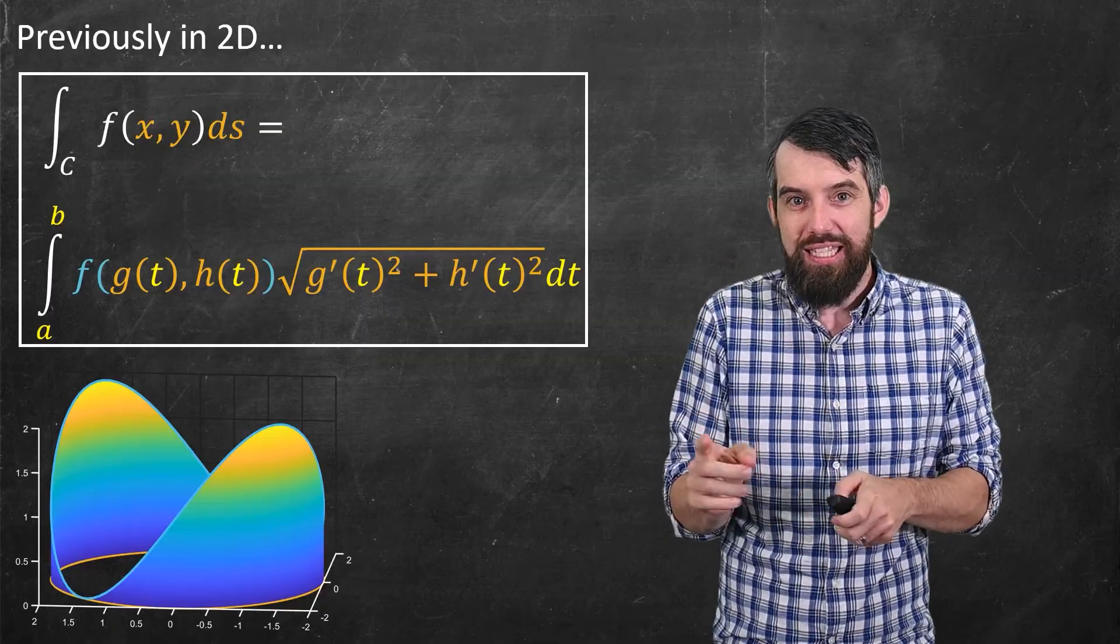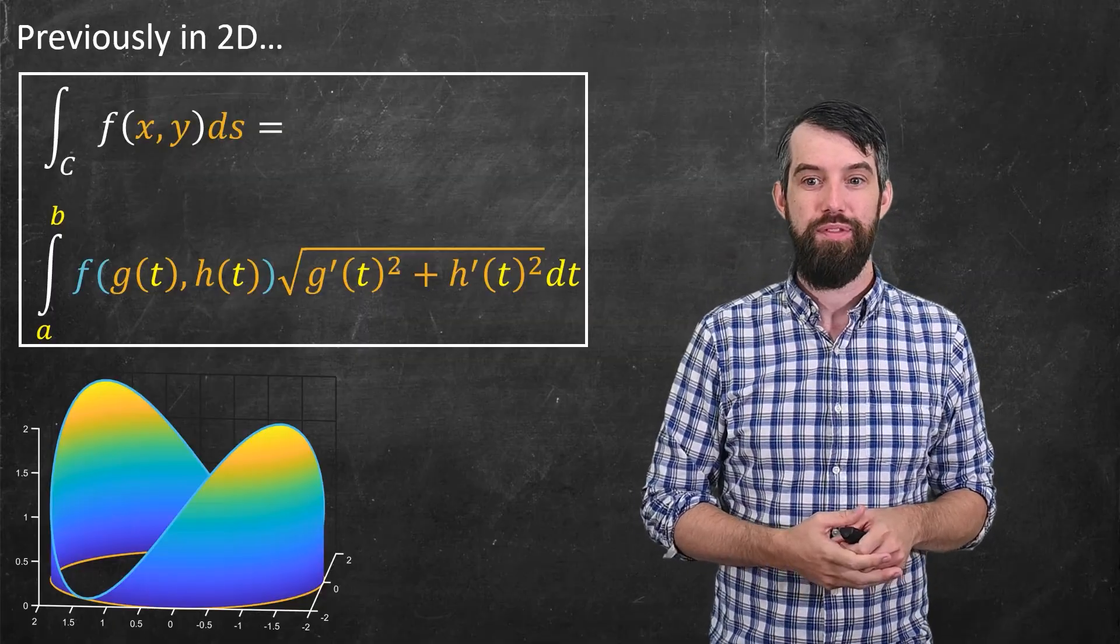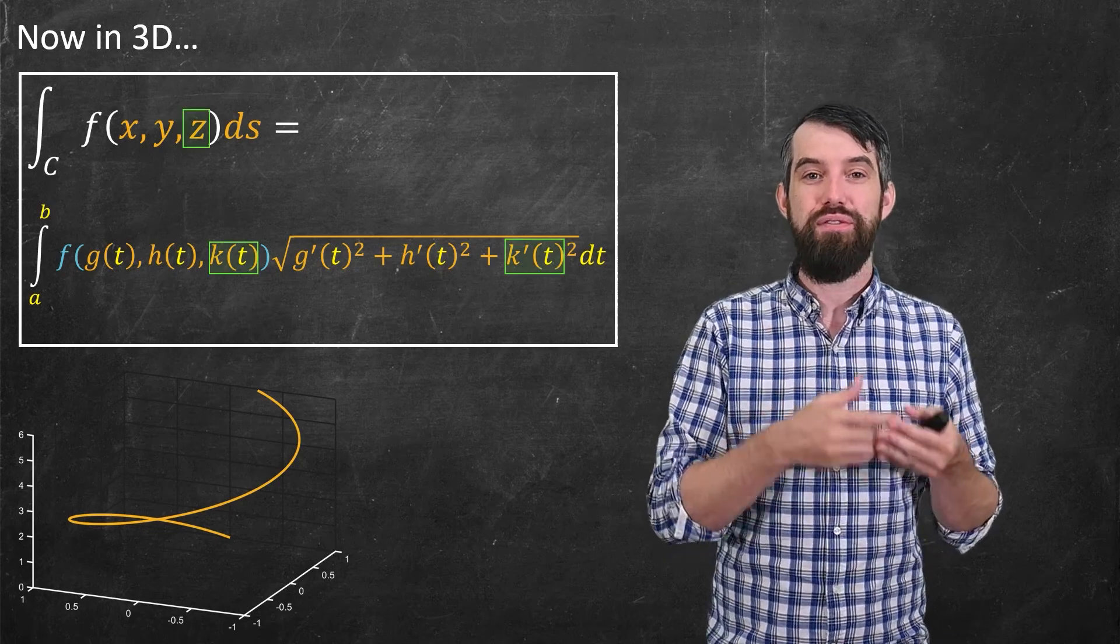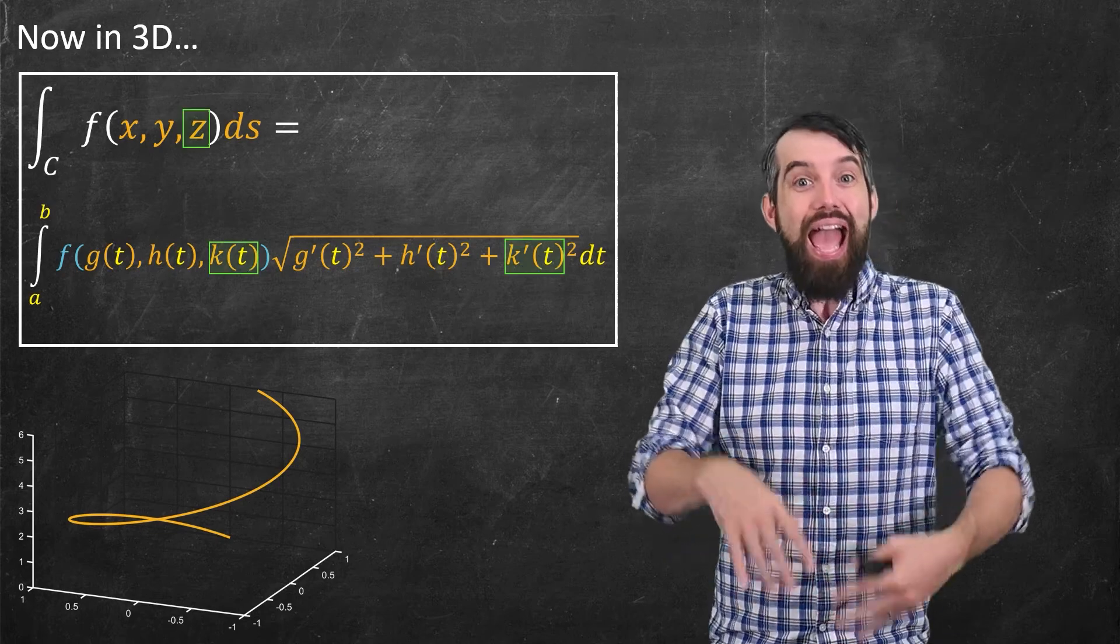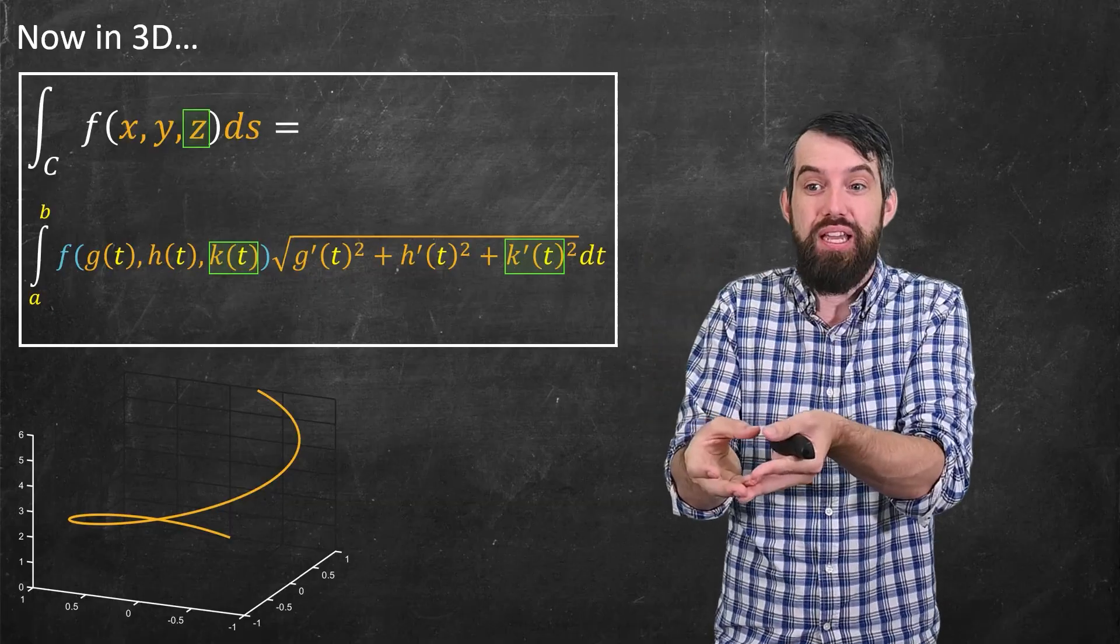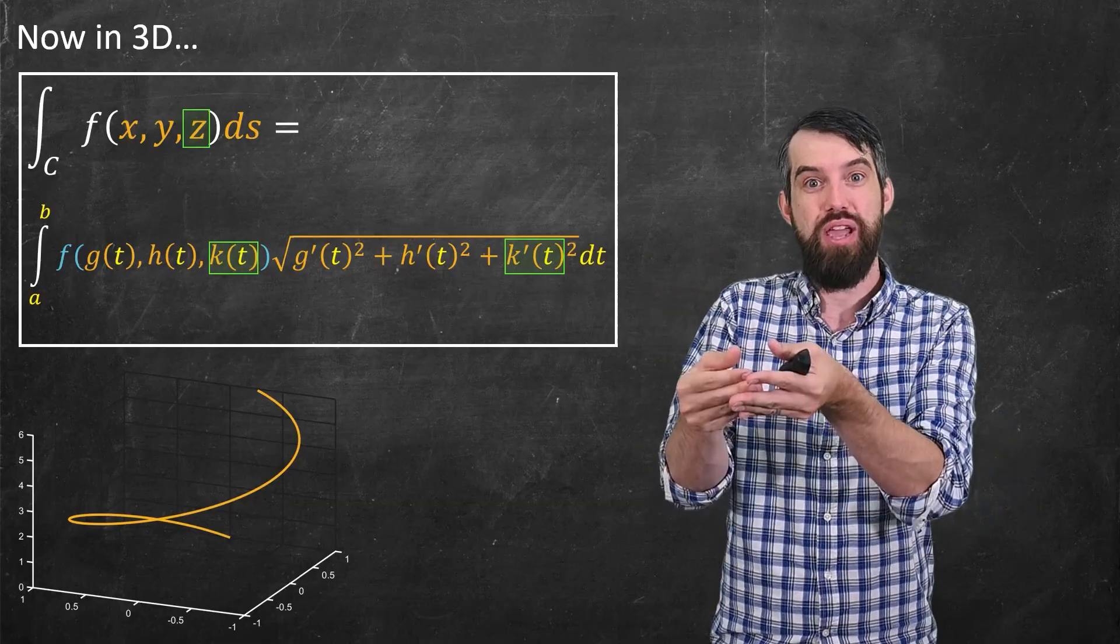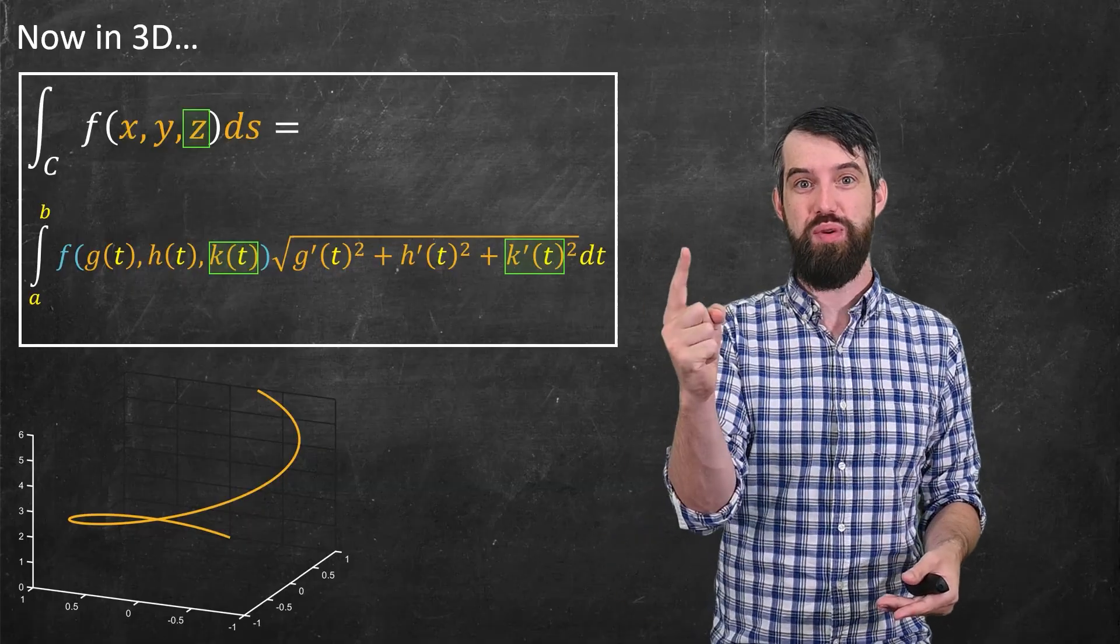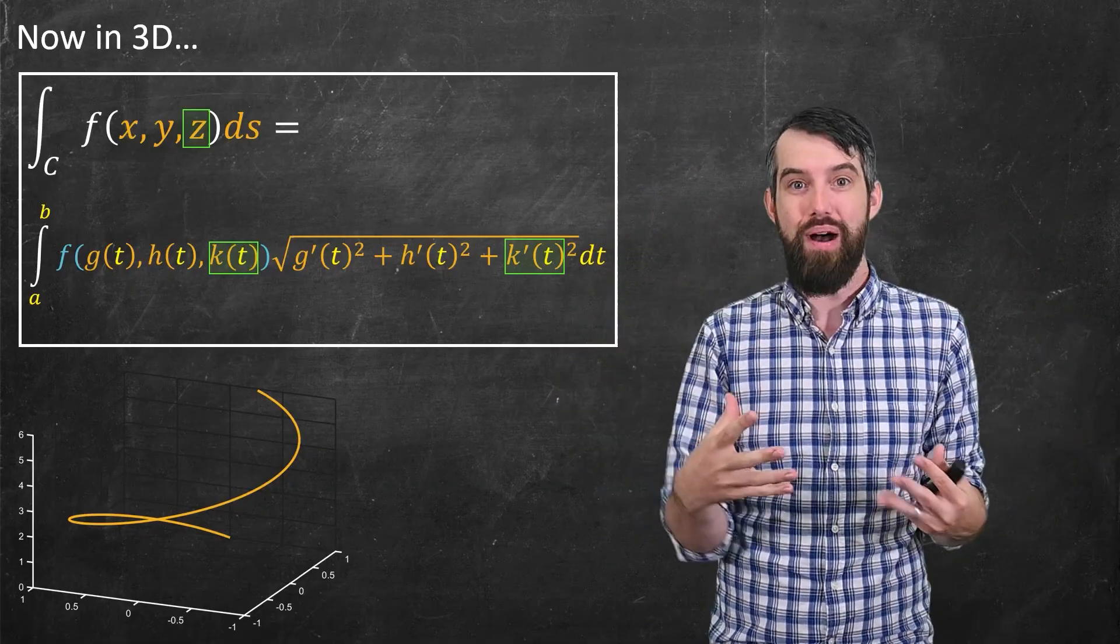Well, the 3D case is basically exactly the same thing. The only thing that's changed here is that everywhere I've added a third component. It's now f(g(t), h(t)), and this new thing k(t). And likewise, there's a k'(t) on my right-hand side as well. And I really do think of it as having this curve in 3D space, and then the function is above it.